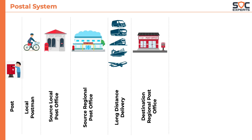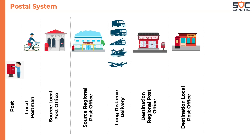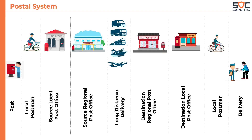It would then reach the destination regional post office, from where it is routed to a local post office. From there, the postman would carry the letter to the final destination and deliver it. Like this, the complex postal system can be broken down into nine layers of operation.